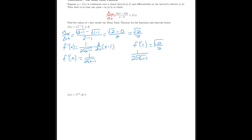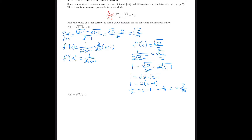Solving 1 / (2√(c − 1)) = √2/2: multiply both sides by 2√(c − 1) to get 1 = √2 · √(c − 1). Square both sides: 1 = 2(c − 1). Divide by 2: 1/2 = c − 1. Add 1: c = 3/2. This value lies within the interval, and it is the point where the slope equals the average rate of change.